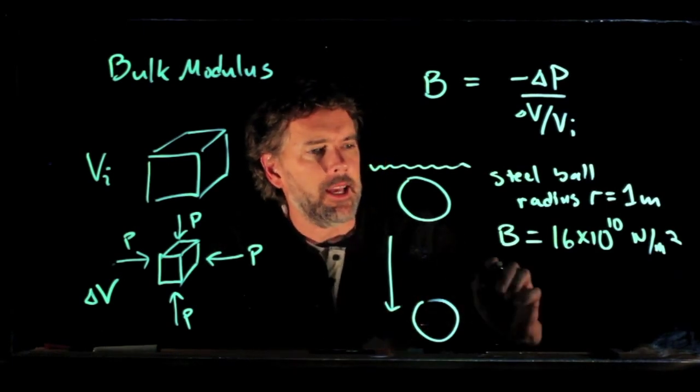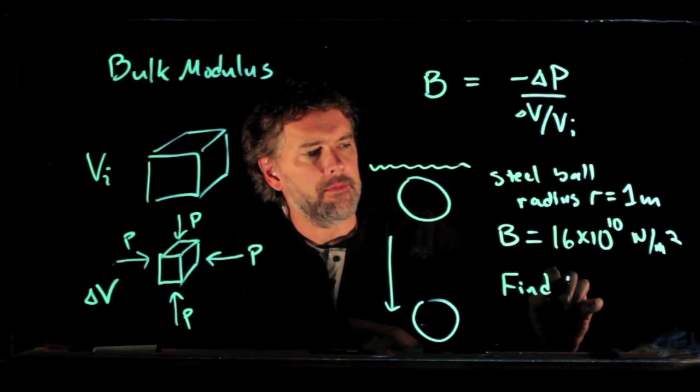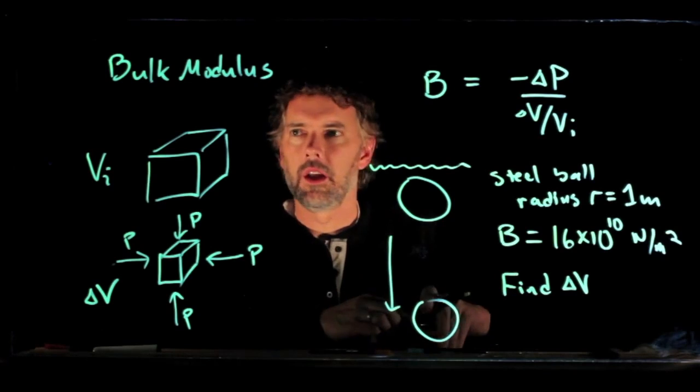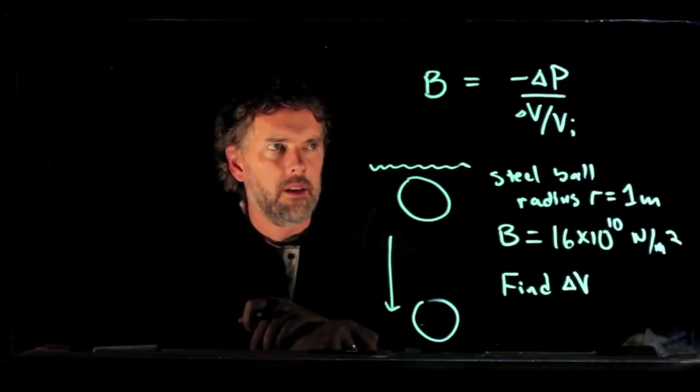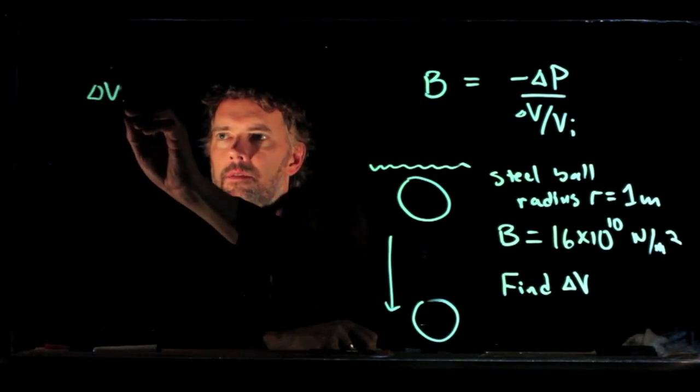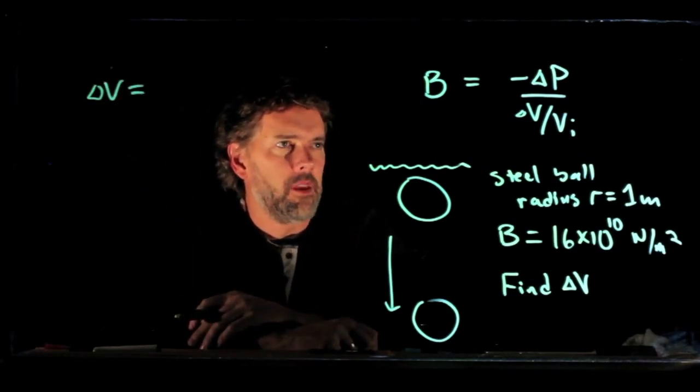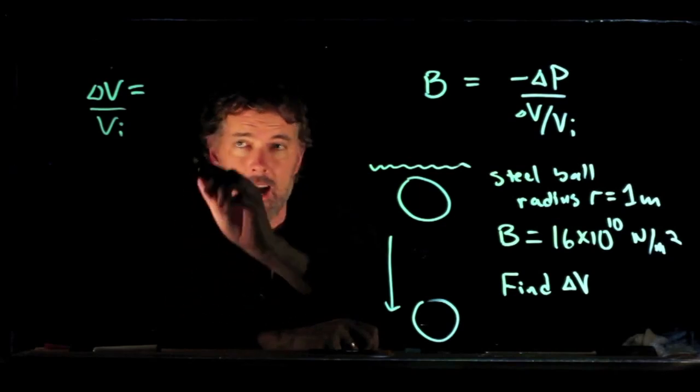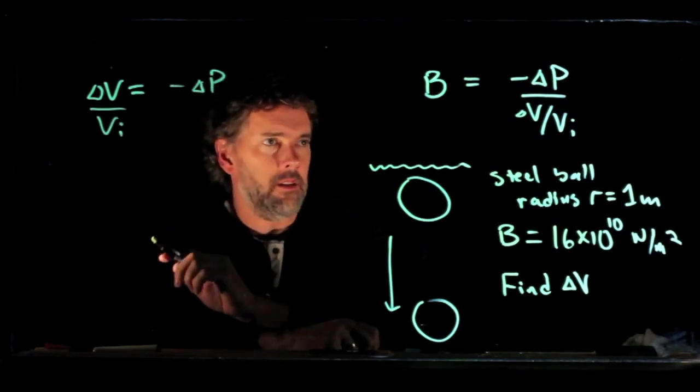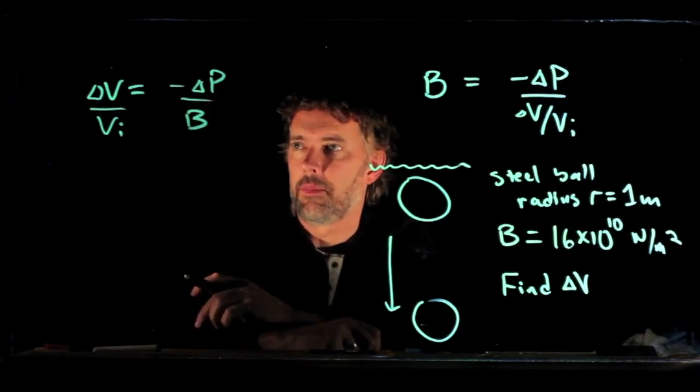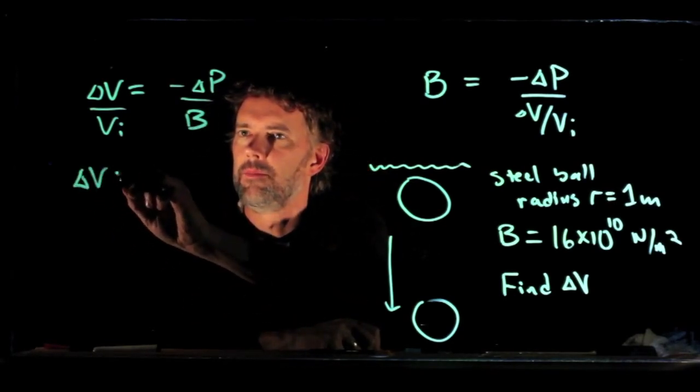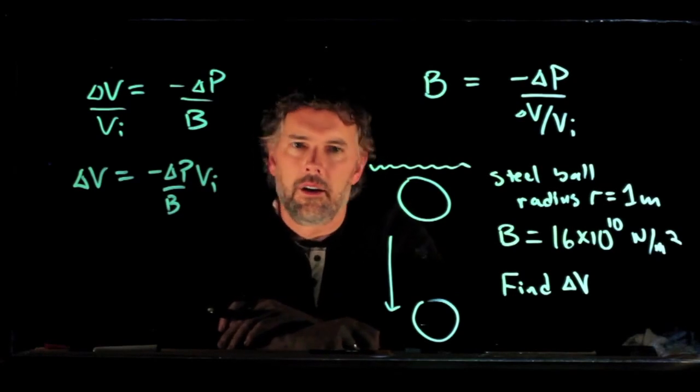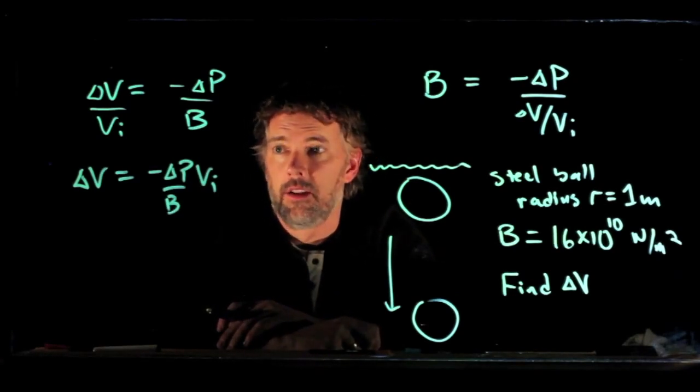All right, let's see if we can calculate ΔV. All right, there's our equation, we can solve that for ΔV. All right, what do we get? We get ΔV is equal to, well we just multiplied across by ΔV over Vi, we had to divide by B, so when I multiply across by Vi I can get my ΔV. All right, now what is ΔP?